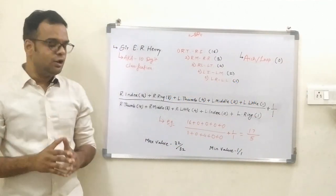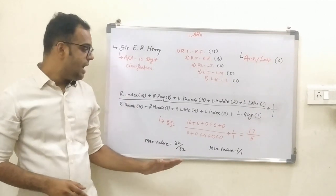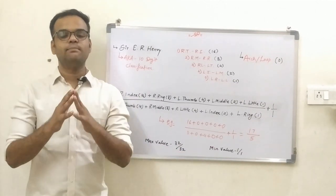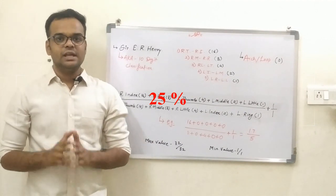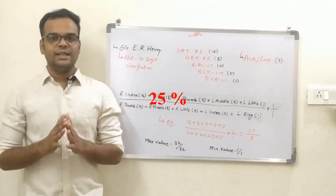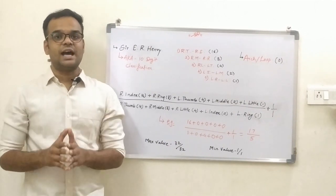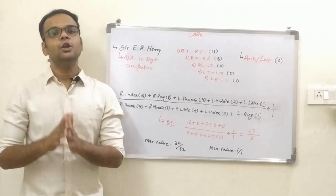The maximum value for this fraction is 32 by 32 and the minimum value is 1 by 1. For example, about 25% of the population has the 1 by 1 fraction, meaning all their fingers have either arch or loop.